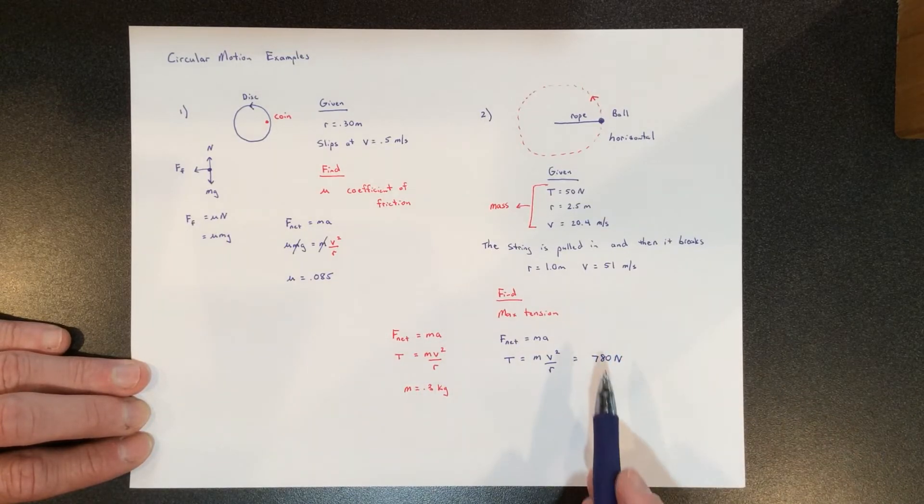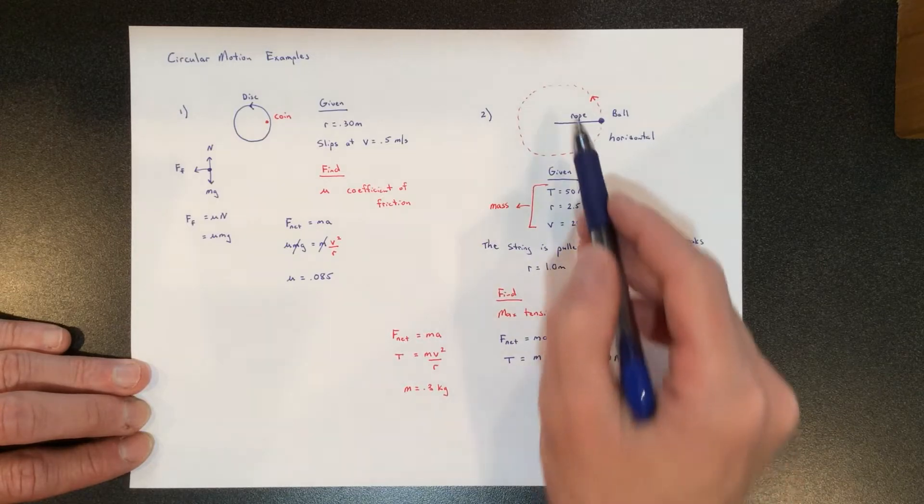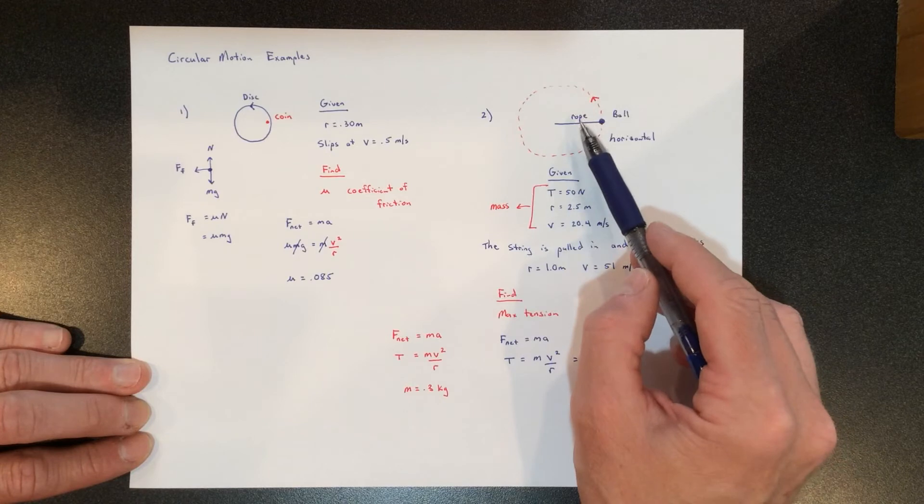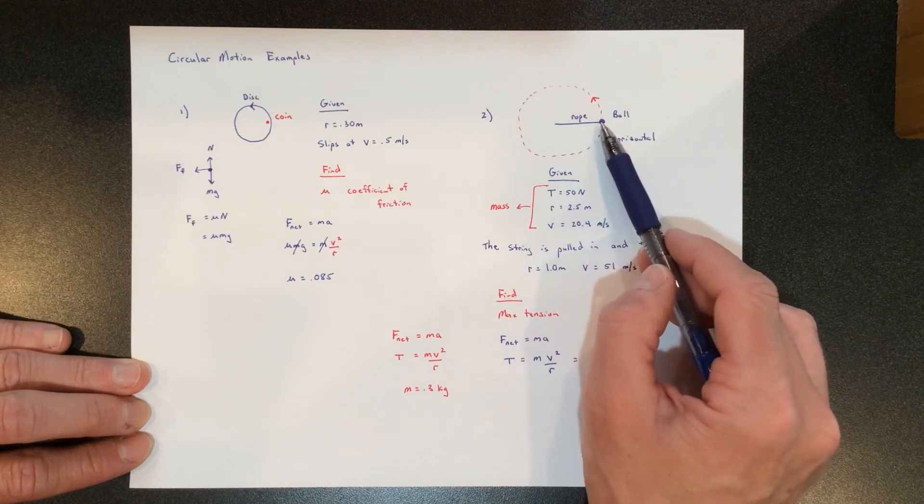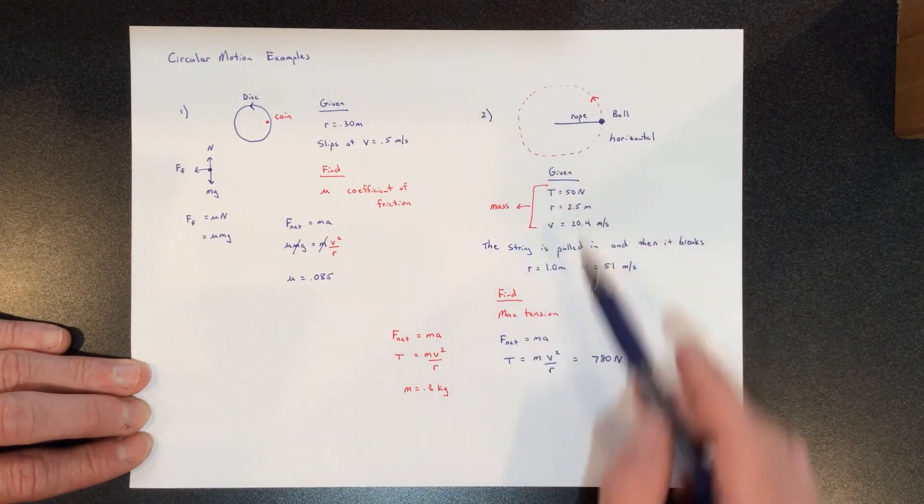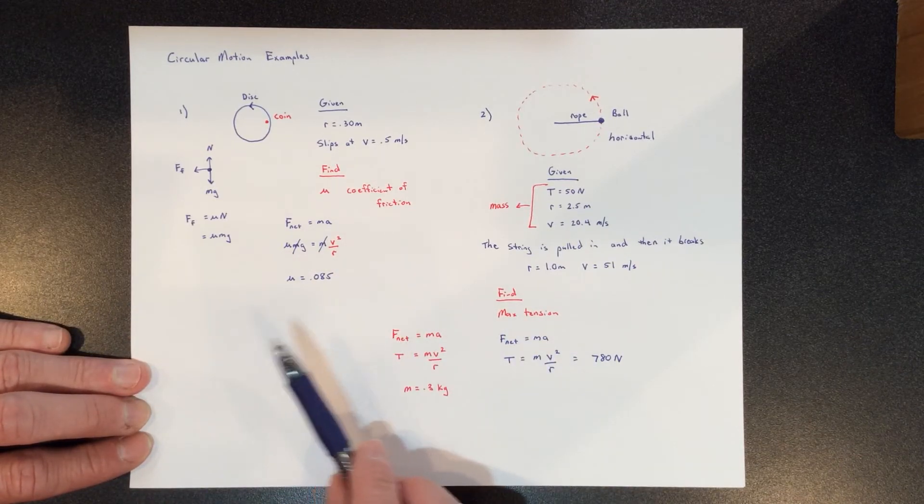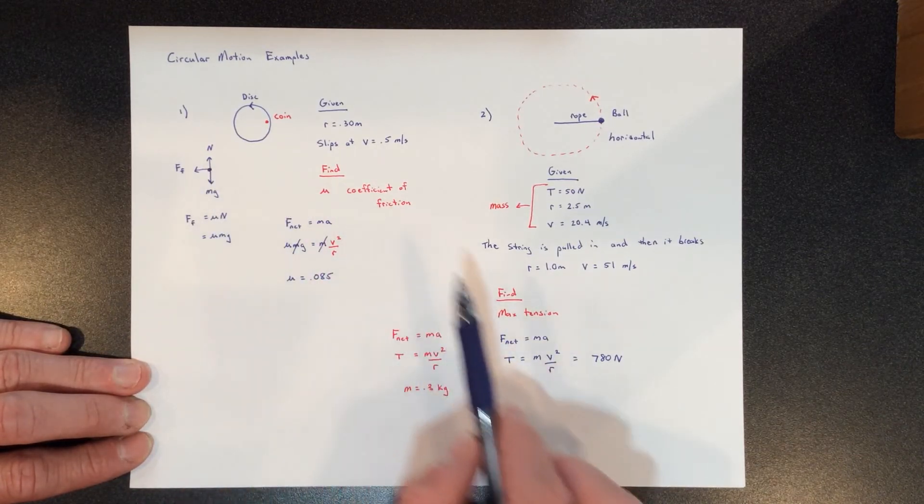When that many newtons is applied to the rope, then the rope is going to break. Again, the rope—the tension in the rope—is the force that makes the ball move into a circle. So these are kind of two basic circular motion problems that also involve Newton's second law.